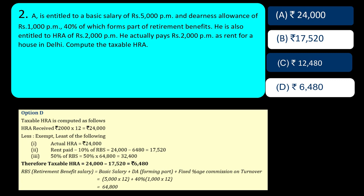For HRA, the salary we consider is called RBS — Retirement Benefit Salary — which has three parts: basic salary, DA forming part of retirement benefits, and fixed percentage commission on turnover. If you calculate your RBS, it comes to Rs. 64,800. Now compute the three limits: actual HRA received; rent paid — Rs. 2,000 per month into 12 = Rs. 24,000 minus 10% of RBS salary = Rs. 17,520; and third is 50% of RBS which is Rs. 32,400. The least of these three is Rs. 17,520.